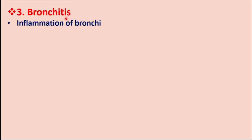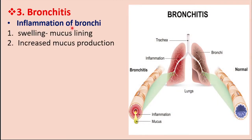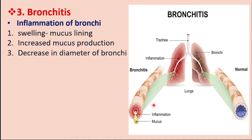The third disorder is bronchitis. It is also the inflammation of bronchi, like asthma. In case of bronchitis, we find swelling of the mucus lining of bronchi and increased mucus production from the bronchi. The mucous membranes swell and mucus production also increases. The common point with asthma is inflammation of bronchi and a decrease in diameter of bronchi. The difference is increased mucous production.